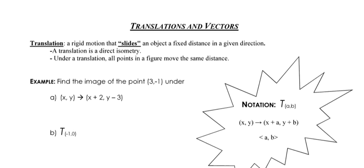This video should provide you with an in-depth exploration of translations. A translation is a rigid motion that takes and slides an object a fixed distance in a given direction. A rigid motion is sometimes called an isometry. What's special about a rigid motion or isometry is that the figure we end up at is exactly the same size as the figure we started with — in other words, it preserves distance.